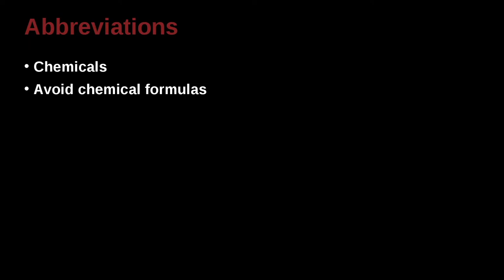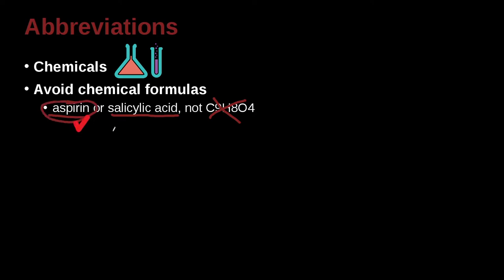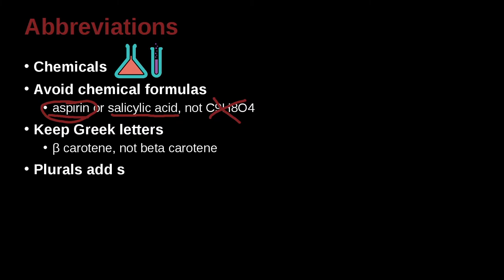Here are some more abbreviations, such as for chemicals. Avoid chemical formulas such as these. Aspirin or salicylic acid, not C9H8O4. So in other words, avoid the formula. This is not good, but this is good, and this is good, and actually I guess aspirin would be the best good, the better one, because it's straightforward and easy for anyone to understand. If you're using Greek letters, then you need to keep those Greek letters inside the text. So here beta-carotene, instead of writing out the word beta-carotene, use the symbol beta, the Greek symbol.